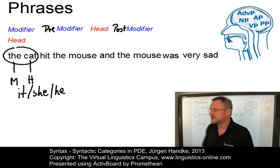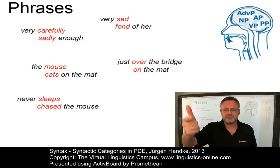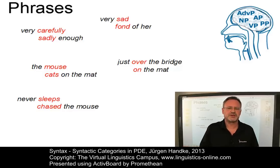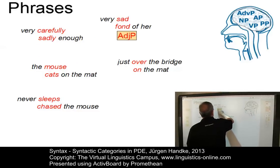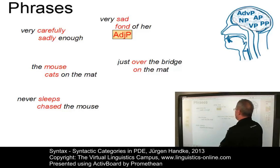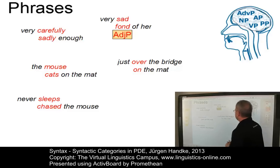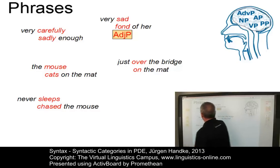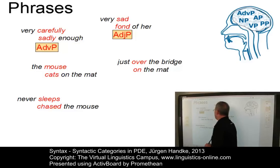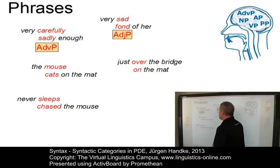Phrases are formed out of the main word classes: adjectives, adverbs, nouns, verbs, and in addition, prepositions. For example, we have the adjectival phrase very sad with sad as the head, or fond of her with fond as the head. In the first case we have a pre-modifier; in the second, a post-modifier. You could also have very fond of her, with both a pre-modifier and a post-modifier. Very carefully or sadly enough are adverb phrases, and the same principle applies — you can have pre-modifiers and post-modifiers, or both.